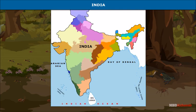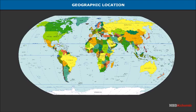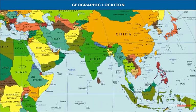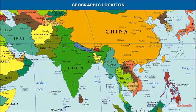India is framed by the Indian Ocean in the south, the Bay of Bengal in the east, and the Arabian Sea in the west.